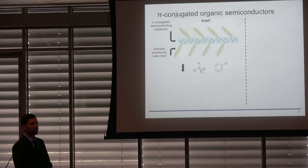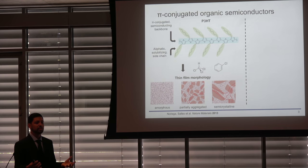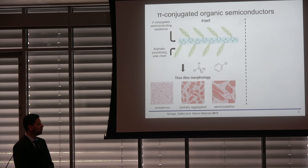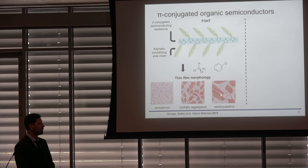When you dissolve P3HT in a solvent such as chloroform or chlorobenzene and cast it into a thin film using spin coating, you arrive at one of three typical morphologies. The first is an amorphous morphology, where polymer chains are randomly distributed with no long or short range order. With thermal annealing, you can get partial aggregation with some short range order. Further thermal annealing creates larger crystalline domains associated with higher charge carrier mobility, which increases the performance of these materials.